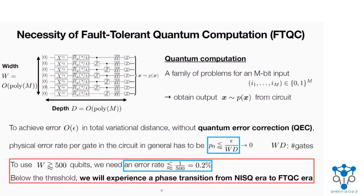For example, if we are using more than 500 qubits, we need an error rate below about 0.2%, no matter how short the circuit depth is, because the width is 500. Below a certain constant error rate threshold, we experience a phase transition from the error regime of noisy intermediate-scale quantum devices, or so-called NISQ error, to the error regime of FTQC.